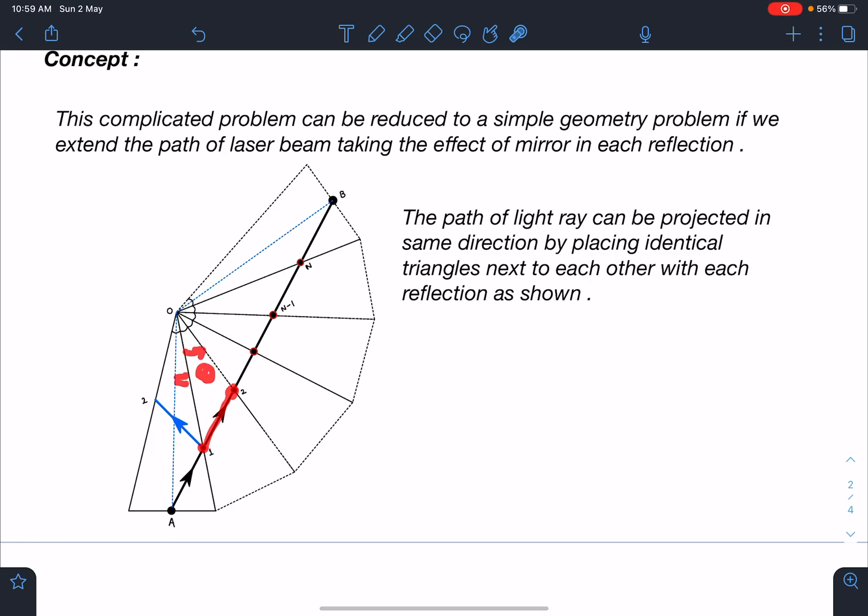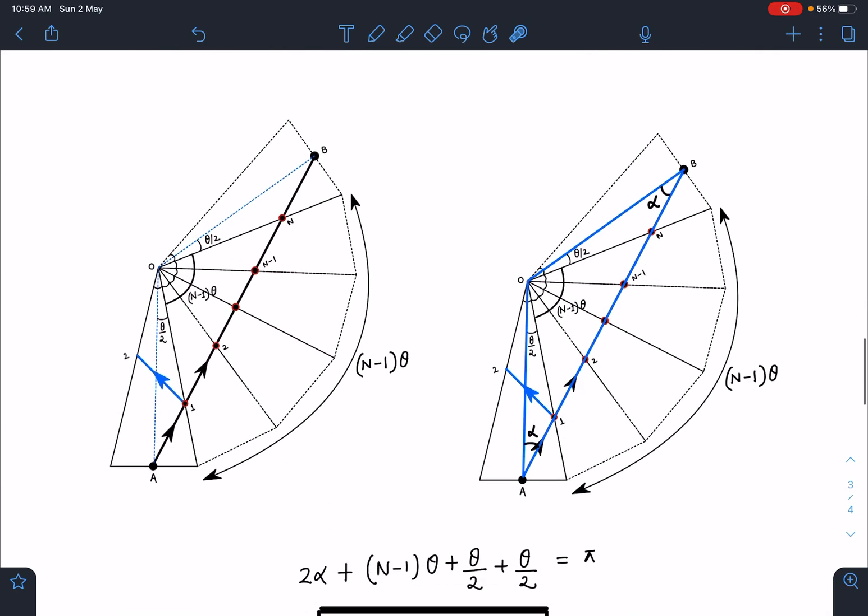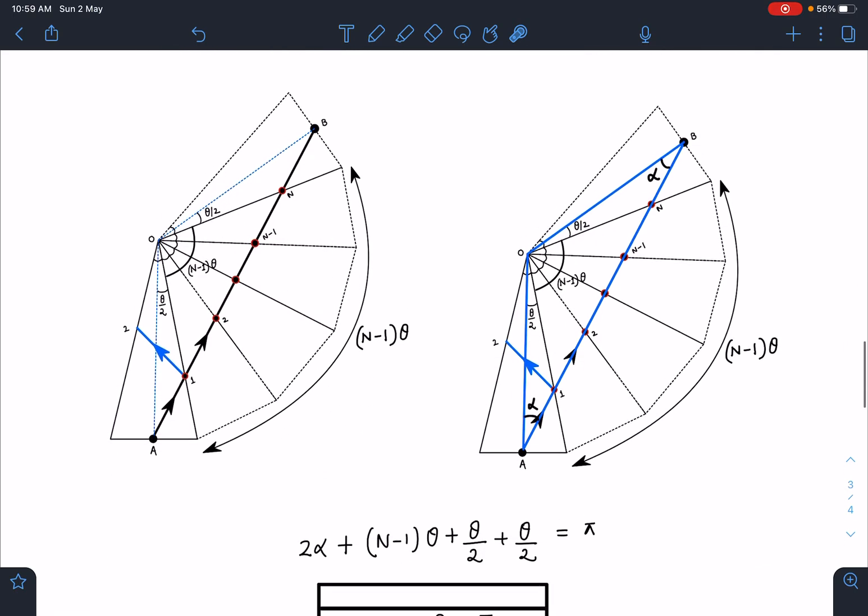Now when second reflection is there, this is first θ. By the way, this angle is θ/2, this is θ. And when third collision or third reflection happens, then this angle total will be 2θ. So like this if we go from here to here, we are going to see total angle of (N-1)θ. Let's check in the next diagram.